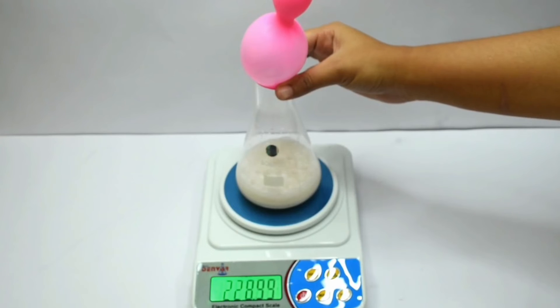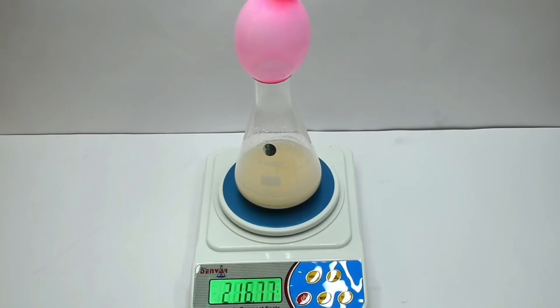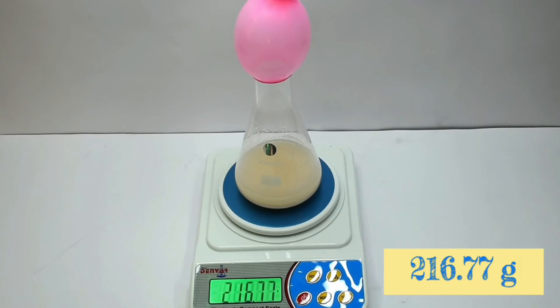As you can see, the balloon slowly blows up. This is because of a gas. Can you name which gas is evolved during this reaction? The gas evolved in this reaction is carbon dioxide. The total weight after the reaction is 216.77 grams.